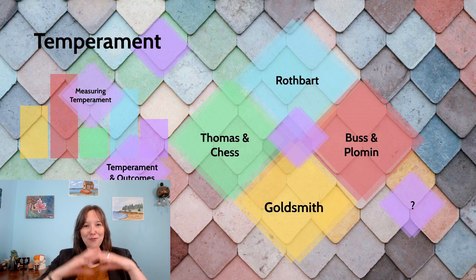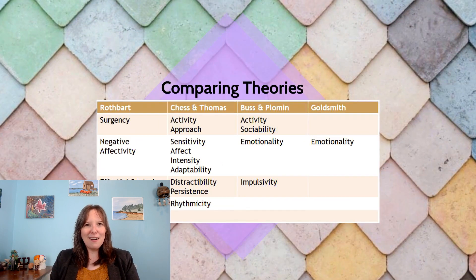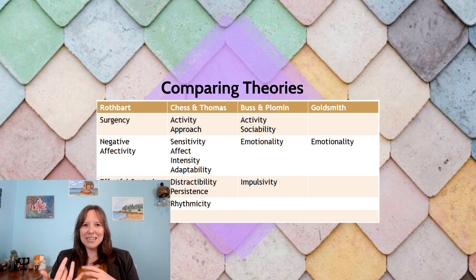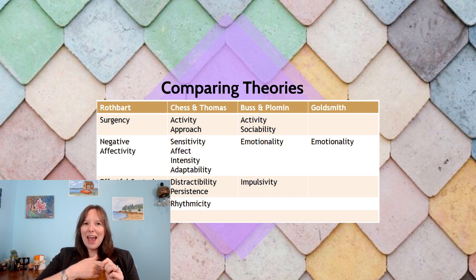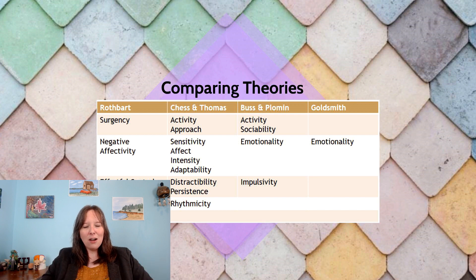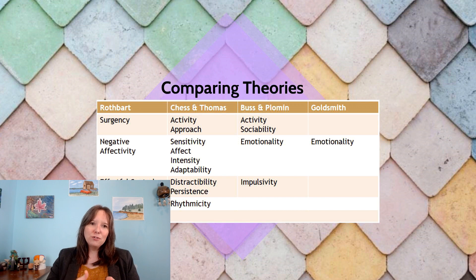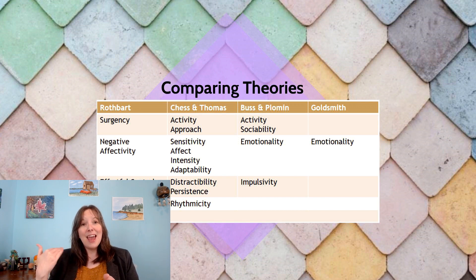Now we've talked about all four main areas of temperament for this course, and it's important to contrast across them. Although Rothbart looked at more biological reactivity, Buss and Plomin looked at genes, and Goldsmith looked at brain physiology, and then we had Thomas and Chess look at more environment and goodness of fit. We can see lots of overlay in terms of their dimensions of temperament — Rothbart's theory of surgency definitely overlaps with Thomas and Chess's ideas of activity and approach, which overlaps with activity and sociability by Buss and Plomin.